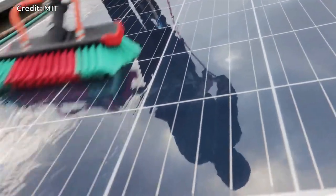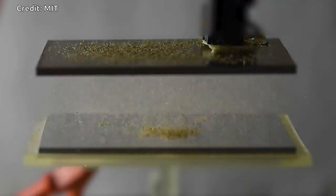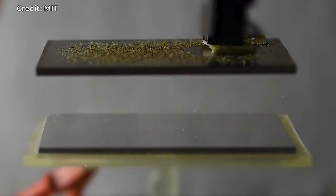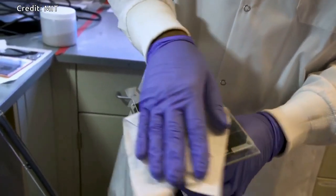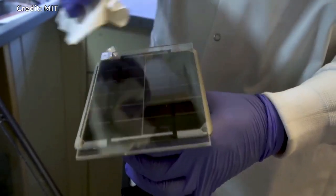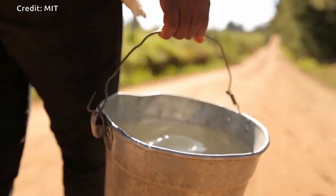So regular cleaning is essential for such installations. But cleaning solar panels currently is estimated to use about 10 billion gallons of water per year, enough to supply drinking water for up to 2 million people.